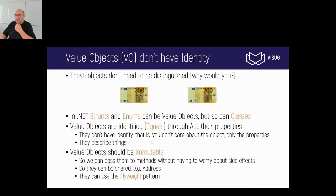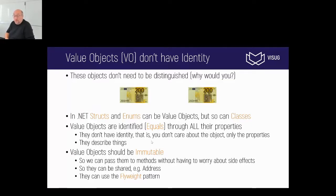Let's start with the domain itself. In domain-driven design, people talk about a concept called a value object. A value object is an object that has state, but it does not have a real identity. For example, if I were to give you a 200 euro bill, would you care which bill I give you — the left one or the right one? In that case, you just don't care.